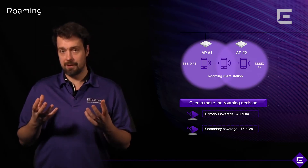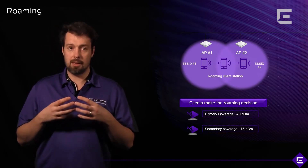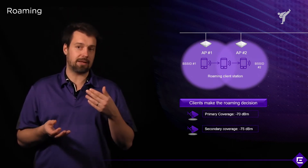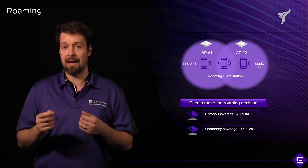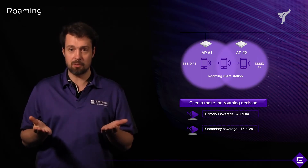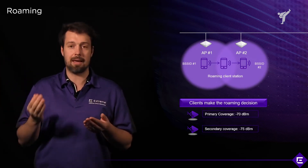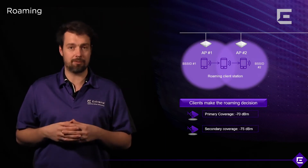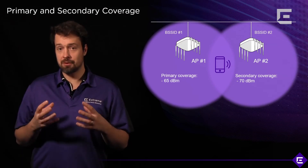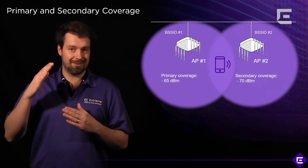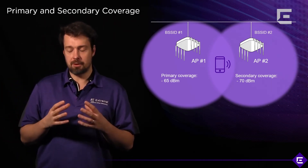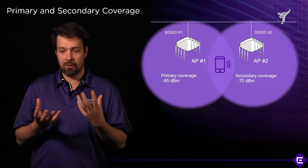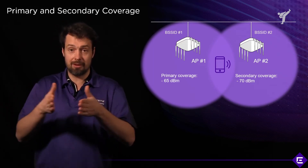Roaming information is also something we collect in Extreme Cloud IQ, and we do expose visibility into roaming events. For each client, you'll be able to see how long it took to roam and if that roaming was successful. A non-successful roam means the client had to re-authenticate. A successful roam means re-authentication was not required and communication with the distribution system continues uninterrupted, so your applications stay up and running. One thing to remember: roaming decisions are always done on the client side, and most often that roaming algorithm depends on SNR or RSSI.